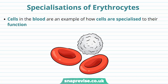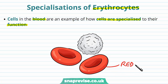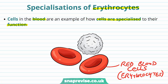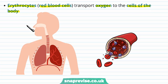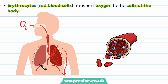Let's go through some specific examples of specialisation to give you an idea of how animal cells can adapt certain features for their function. We'll talk about erythrocytes, which are red blood cells. Cells in the blood are a good example of how cells can be specialised. Erythrocytes have the function of transporting oxygen to the cells around the body. Once oxygen has been breathed into the lungs, it enters the blood capillaries, and in the blood it's delivered around the body. The oxygen is bound within the red blood cells and this is how it's transported.